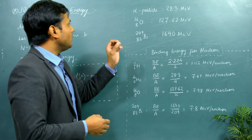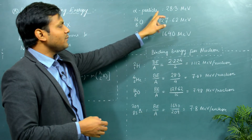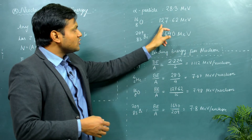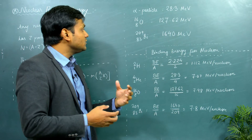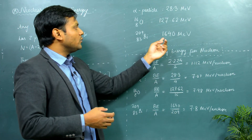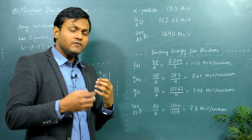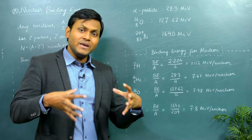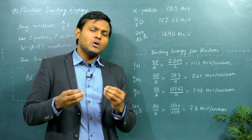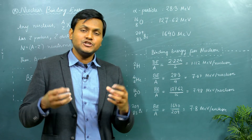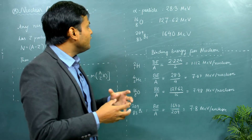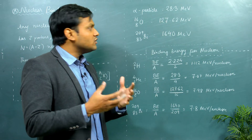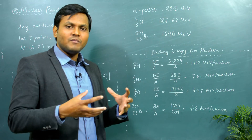I have calculated this for a couple of examples. For the alpha particle, the binding energy comes out to be 28.3 mega electron volts. For oxygen, it is 127.6 mega electron volts. For bismuth, it comes out to be 1640 mega electron volts. As you can see, with increasing mass number, as the nucleus becomes bigger and bigger, you require more and more binding energy to hold the nucleus together. However, these values cannot be directly compared because they increase with the mass number of the nucleus.